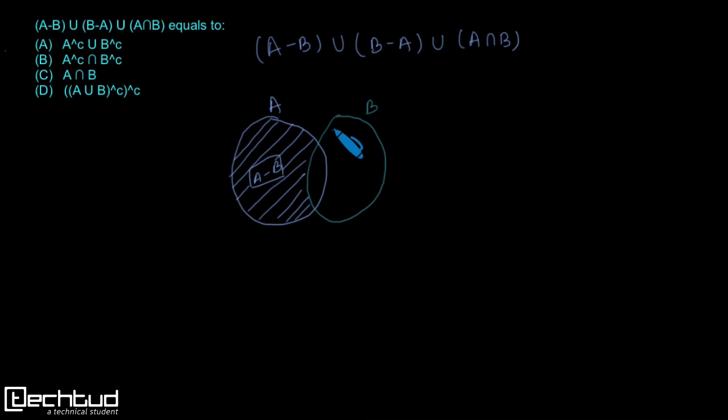And what is this remaining part of B? This is B minus A. Well, this is B minus A, this part.